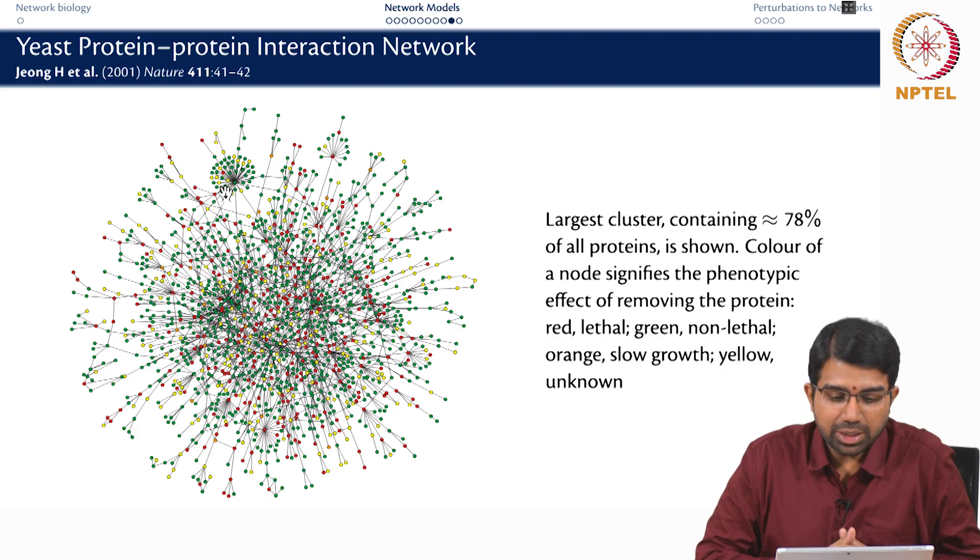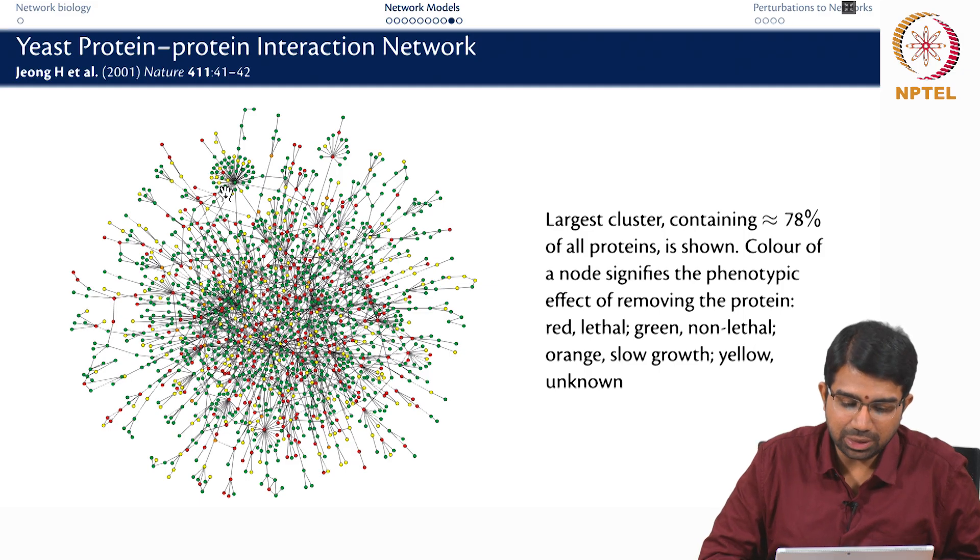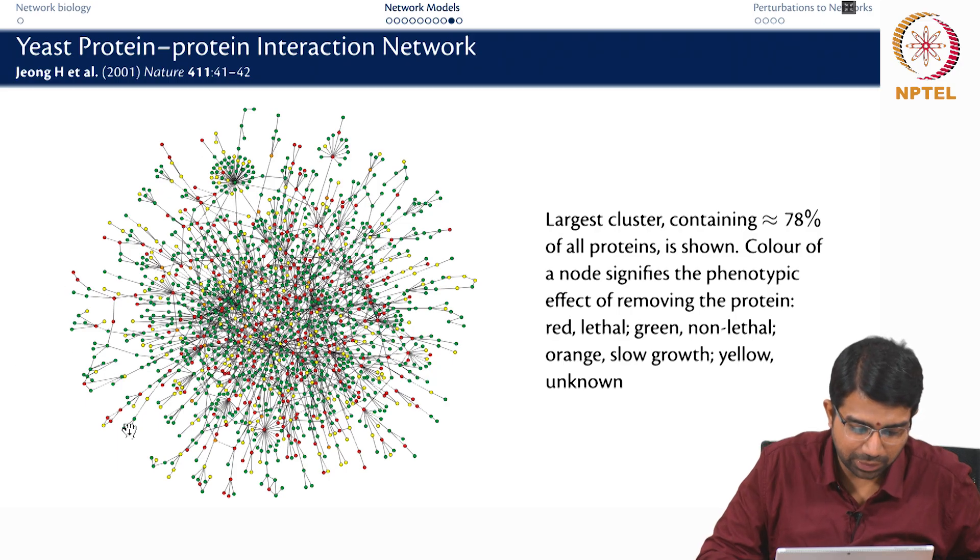So from this, do you already observe something? Is there anything that is sort of apparent from the picture? Hubs are green or hubs are red? Many hubs are actually red. Some hubs could be green, but you find that majority of the hubs are actually red. And if you see all the peripheral nodes, you will find that they are all mostly green. The nodes which have very few connections.